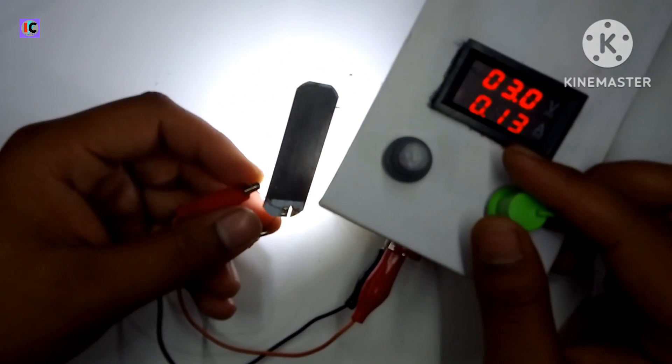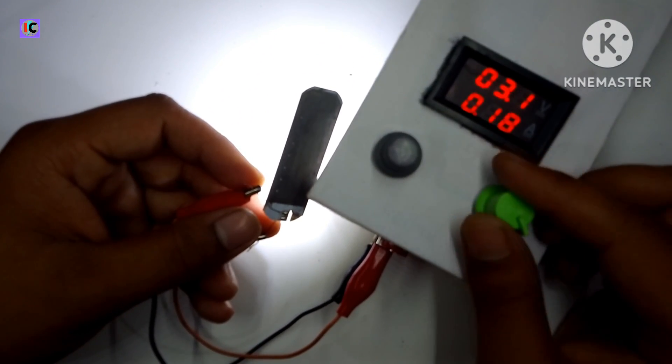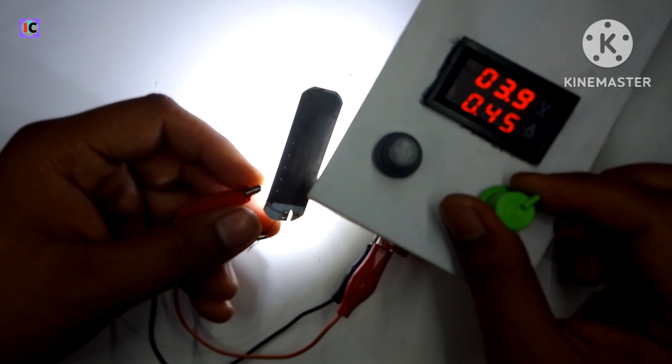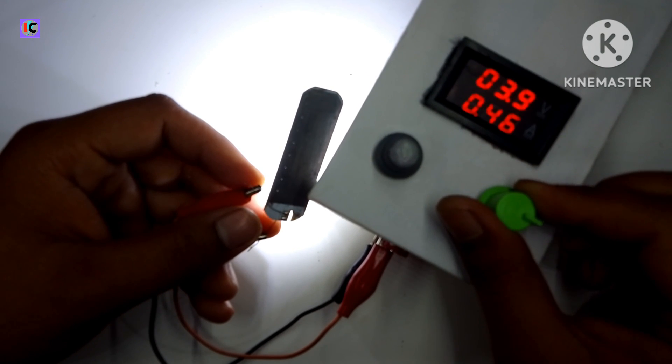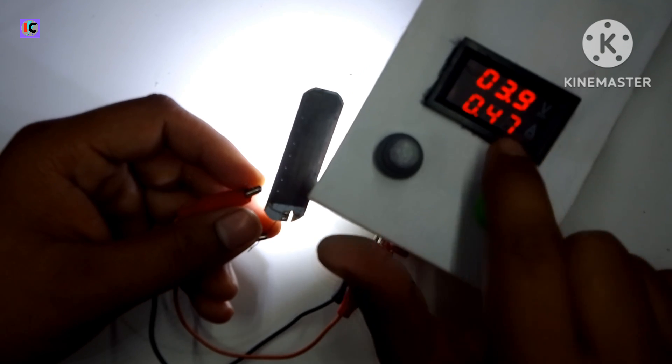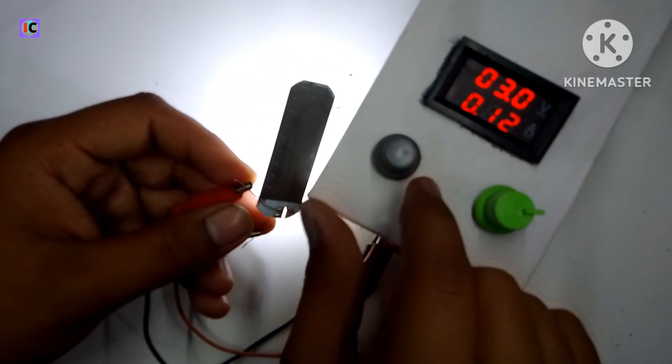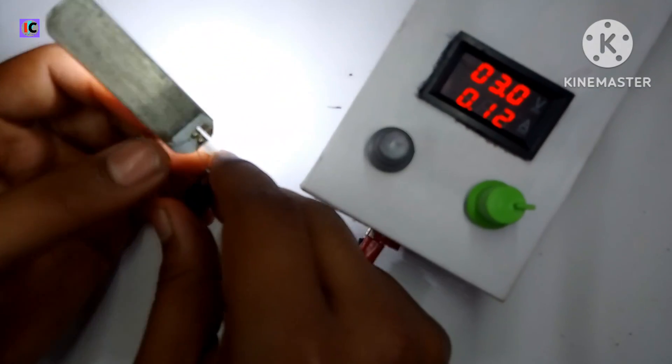And you can see the current consuming is 0.13 ampere. Now at this point you can see the voltage is almost 4 volt and the current required by this LED is 0.5 ampere. Now you can see I am controlling the current potentiometer.